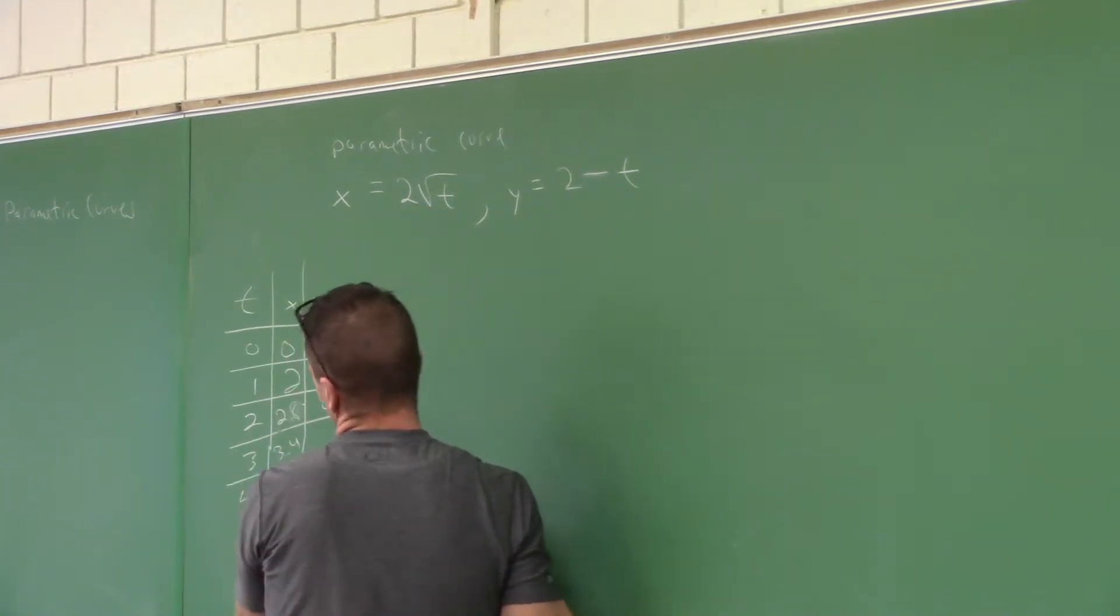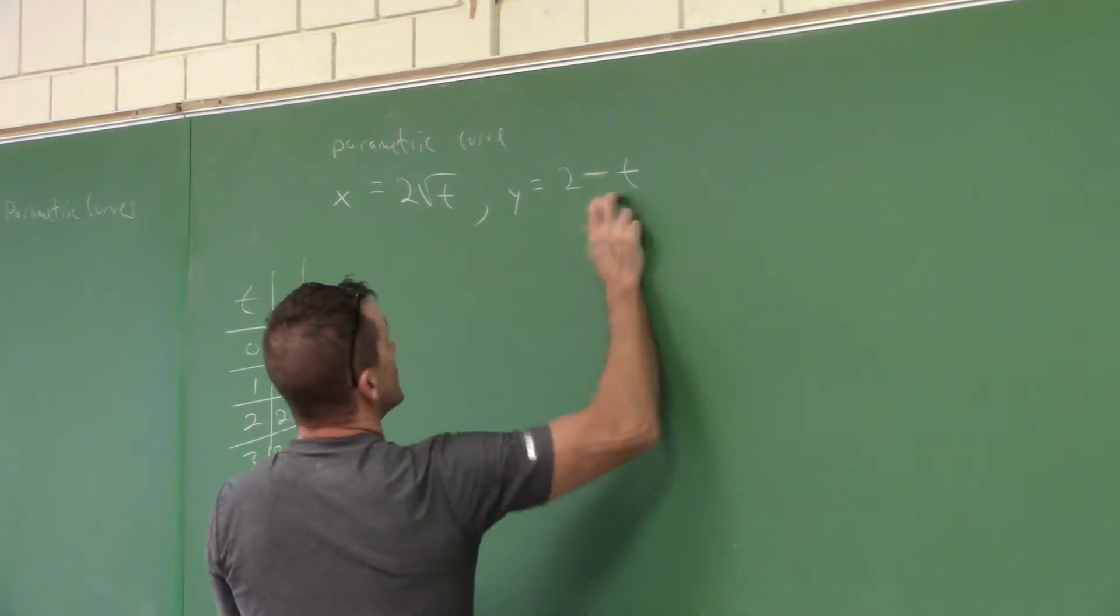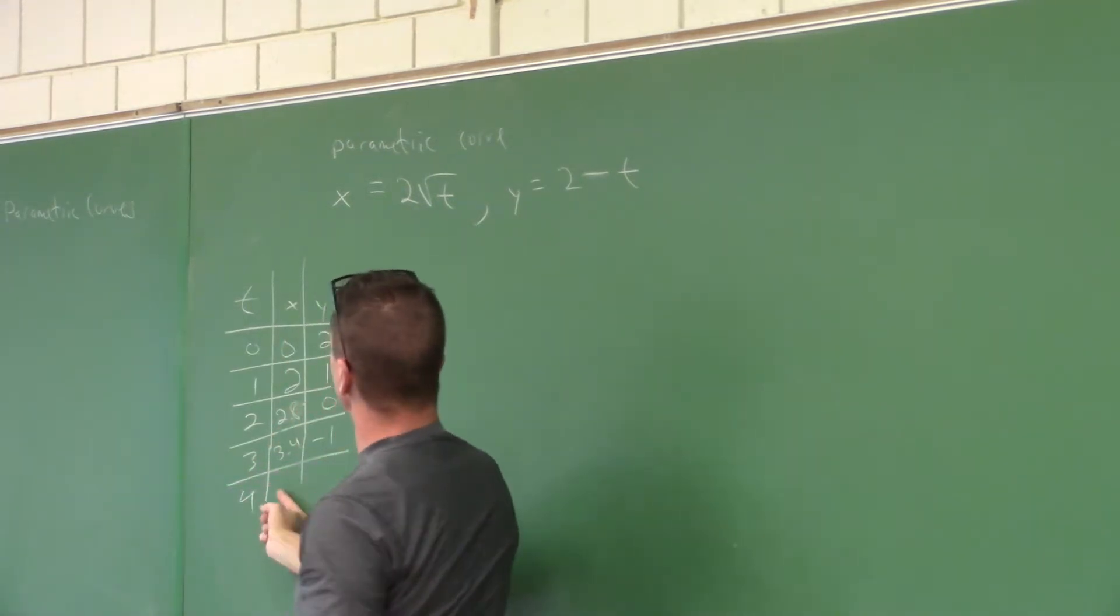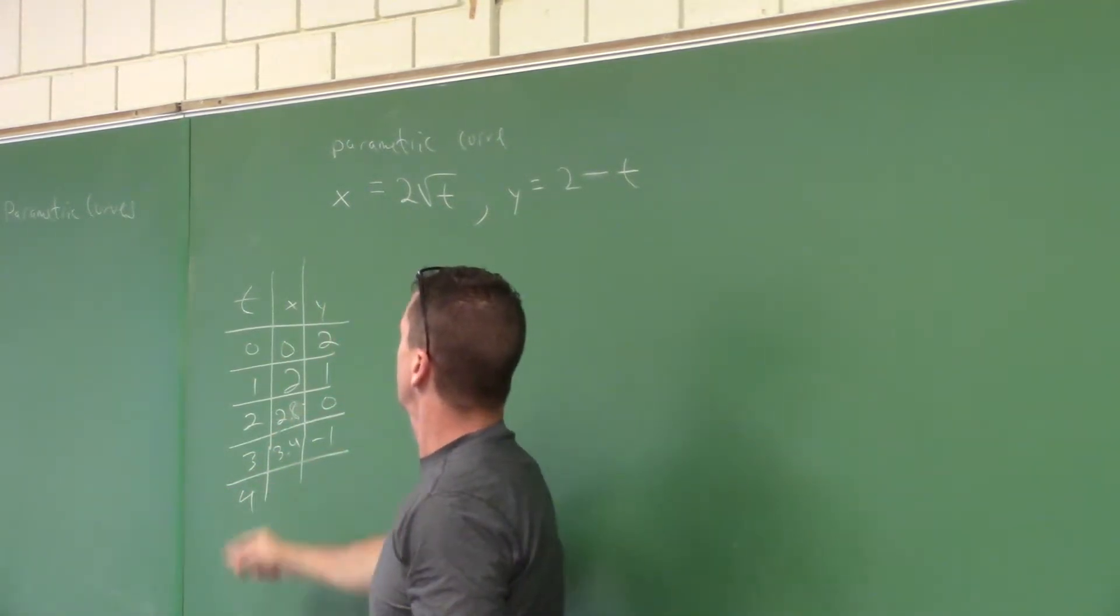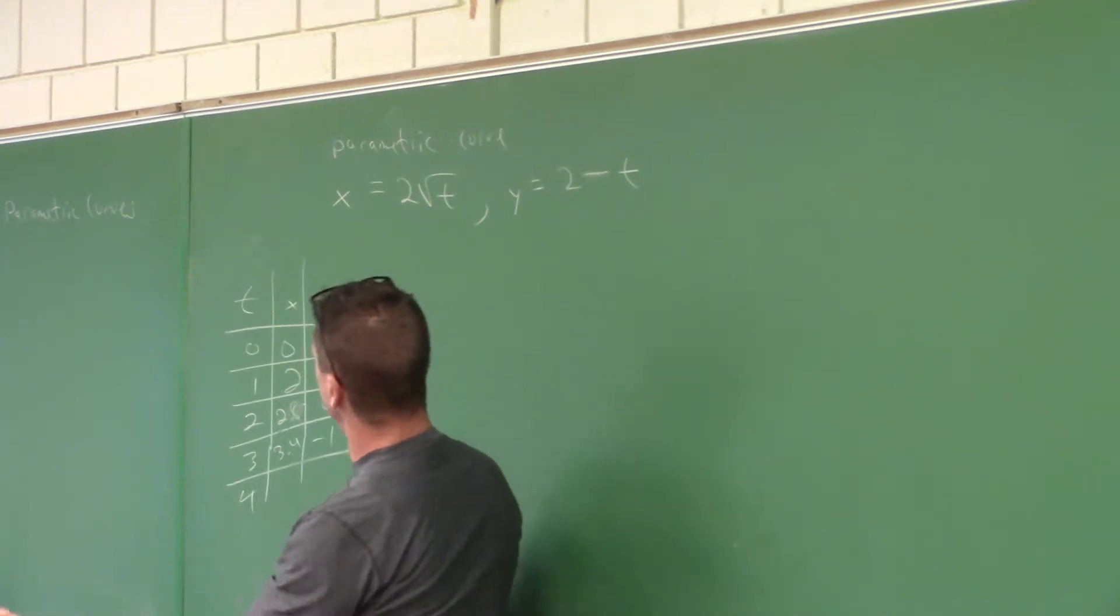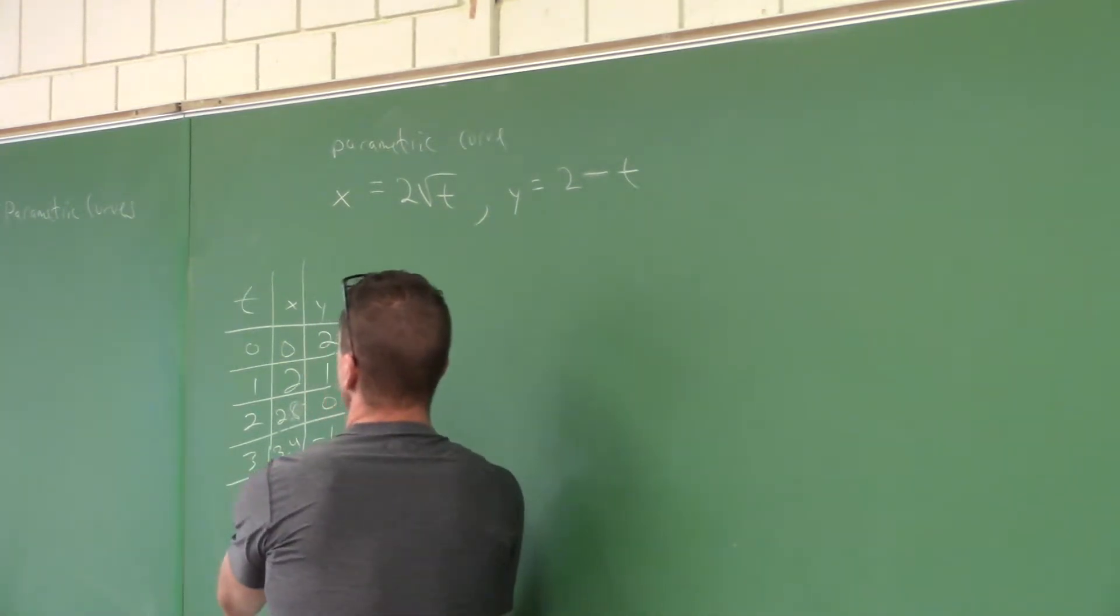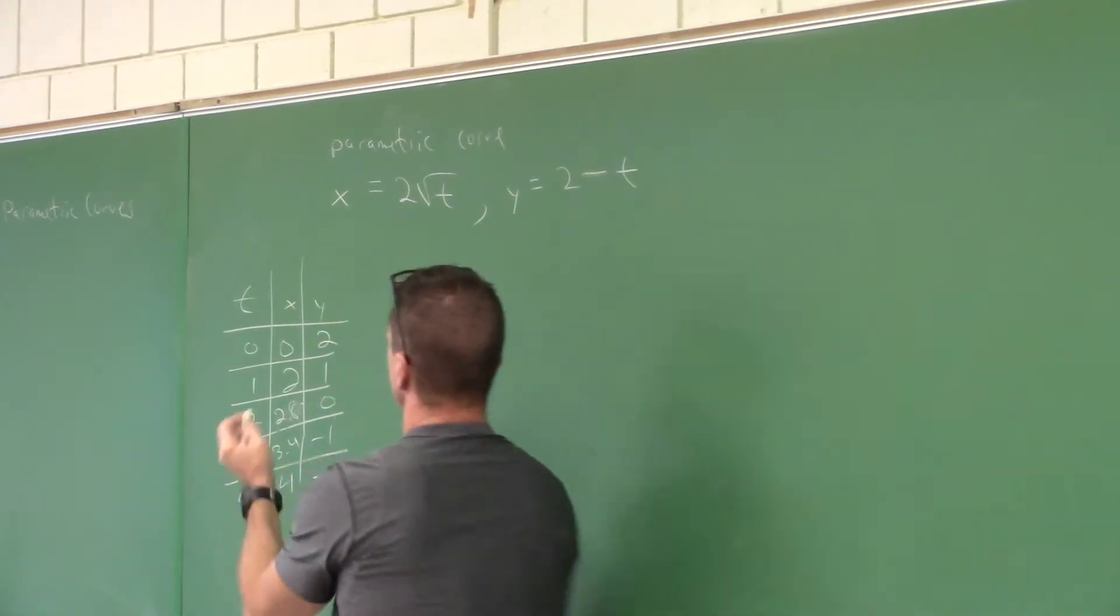We're going to plot these, right? I'll plot that about three point four. At least this is neat. Two times the square root of four is two times two is four, but this goes to zero. Two minus four is negative two. Let's just see what all this looks like.